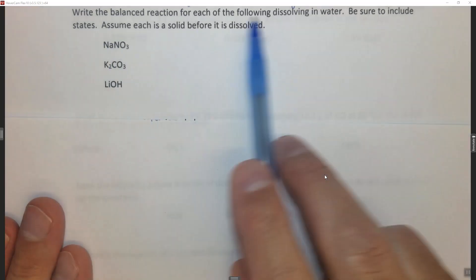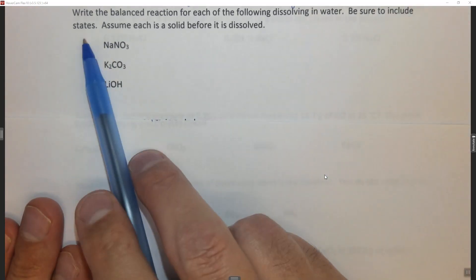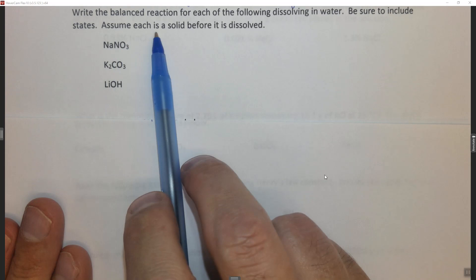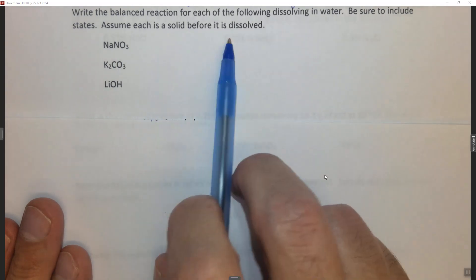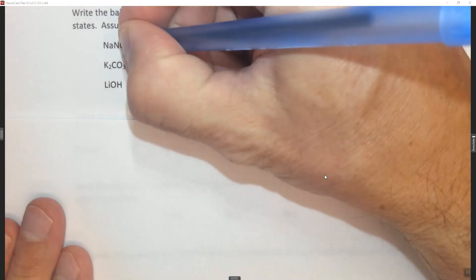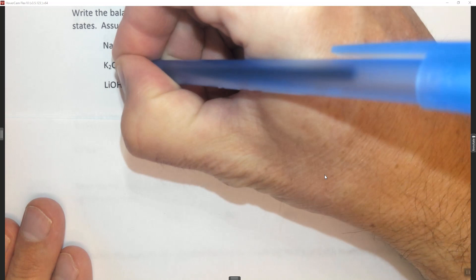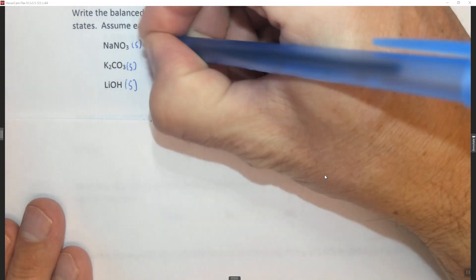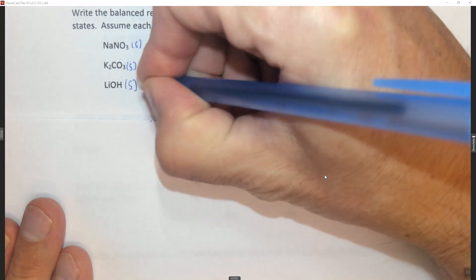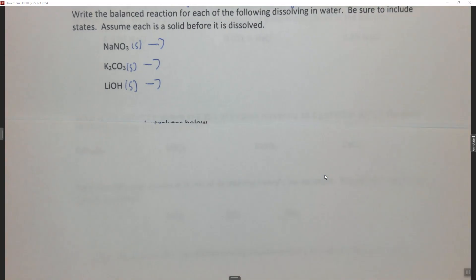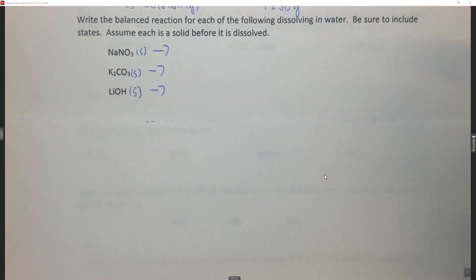This question says write the balanced reaction for each of the following dissolving in water. Be sure to include states, assuming that each is a solid before it is dissolved. So essentially we have each of these things as a solid and we're going to dissolve them in water and we can write this as what looks like a chemical reaction, although whether it is or isn't is arguable, but it certainly looks like a chemical reaction.